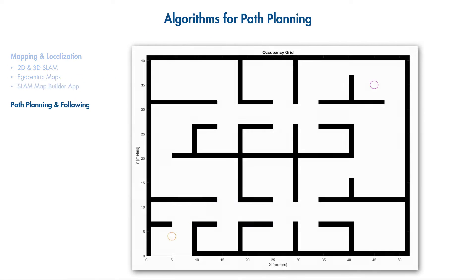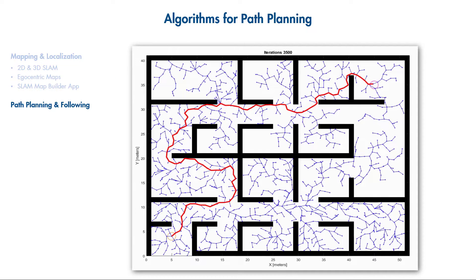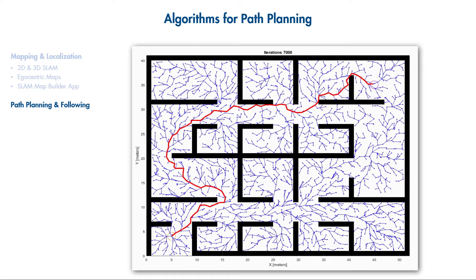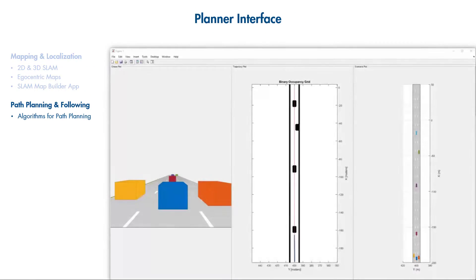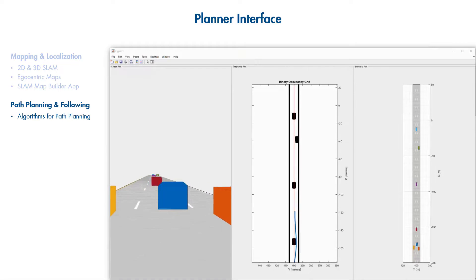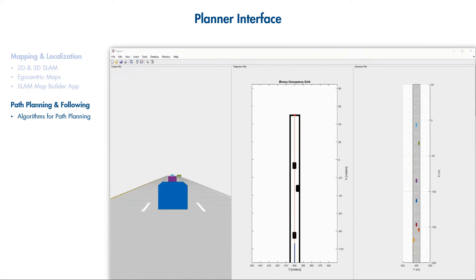You can use sampling-based path planners such as RRT and RRT Star to find a path from start to goal locations within a map. You can customize the planner interface according to your application's state space.